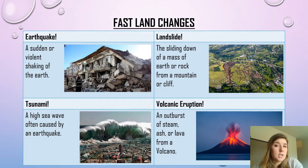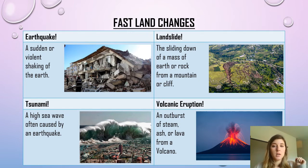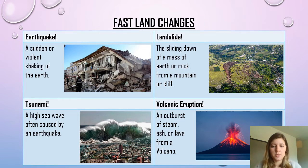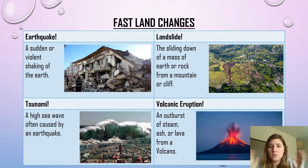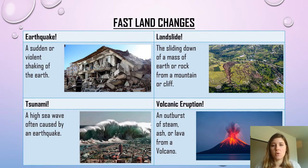Some fast land changes — I know you learned these in third grade but just to review — we've got earthquakes, landslides, tsunamis, and volcanic eruptions. These are things that are quickly breaking, moving, or destructing something on the earth's surface. After these occur, we've got changed land. That's the whole point of the land change.